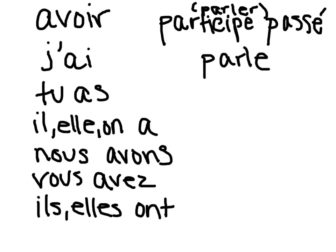You do the e with an accent above. Whenever you have parler, for -ER verbs, you always chop off the -ER and replace it with an é. So parlé, and you use that for all the verb forms in the conjugation.